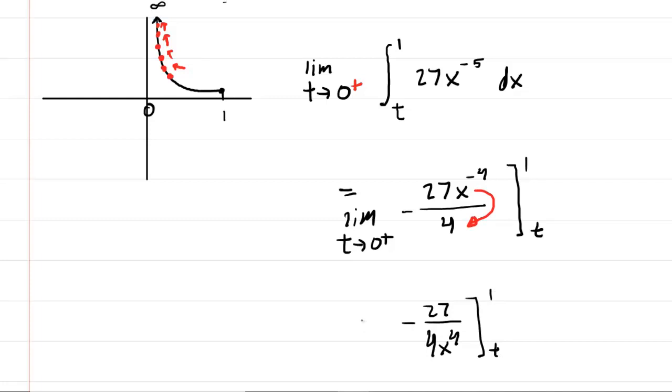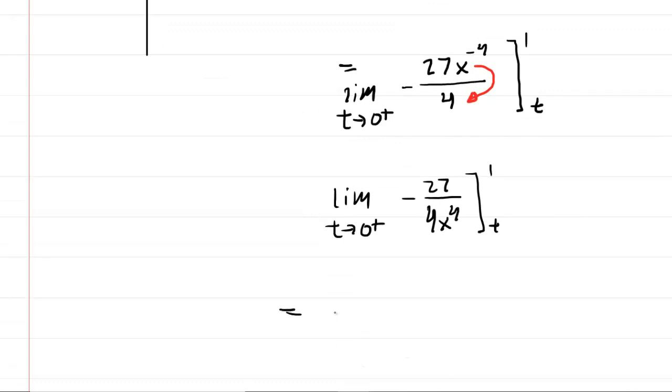And then what we'll do is we'll plug in the upper bound followed by the lower bound. Now the upper bound is one. So we're going to have the limit as t approaches 0 from the right of negative 27 over four, multiplied by one to the power of four, then we'll plug in the lower bound and we're going to subtract.